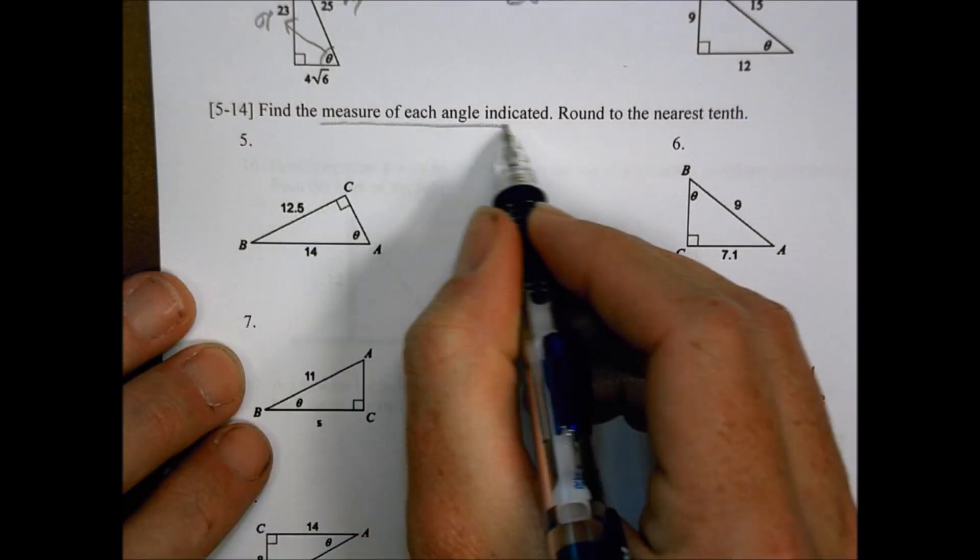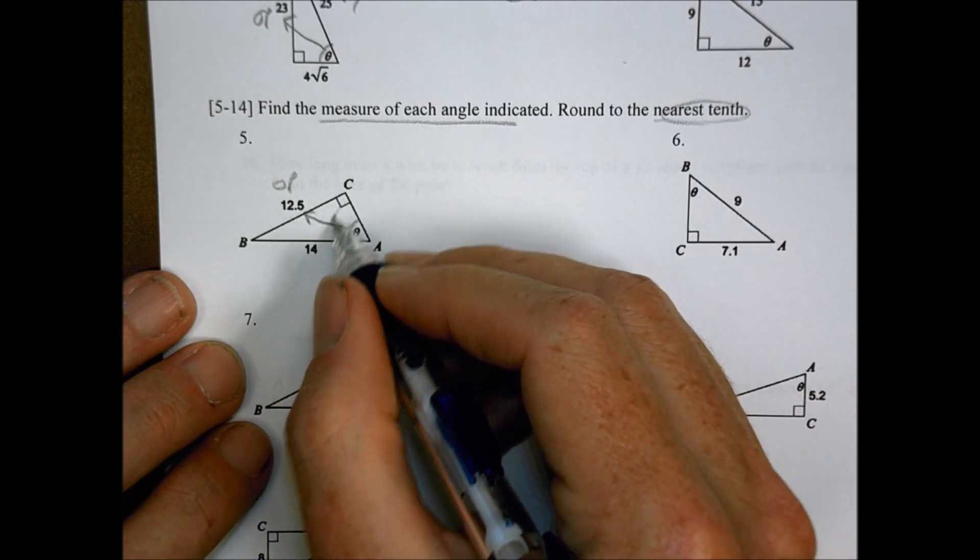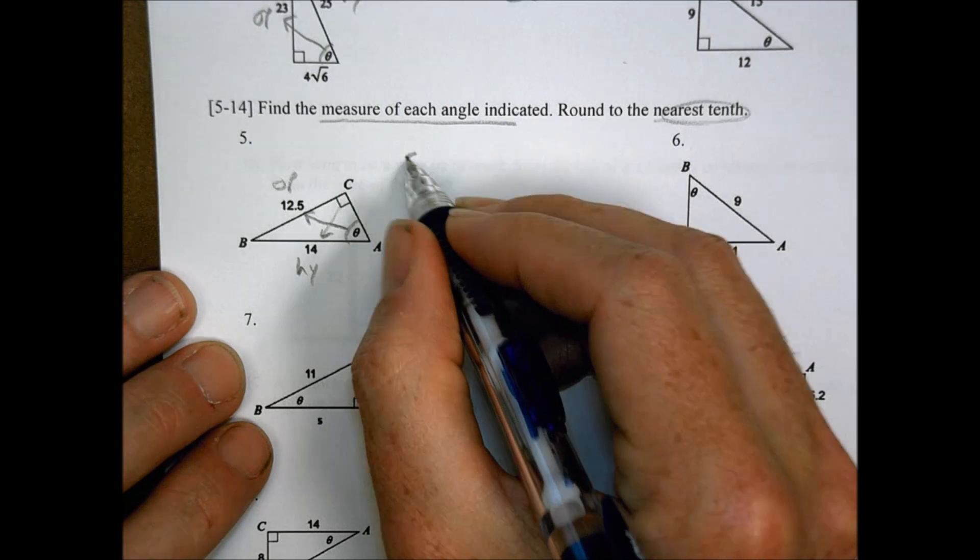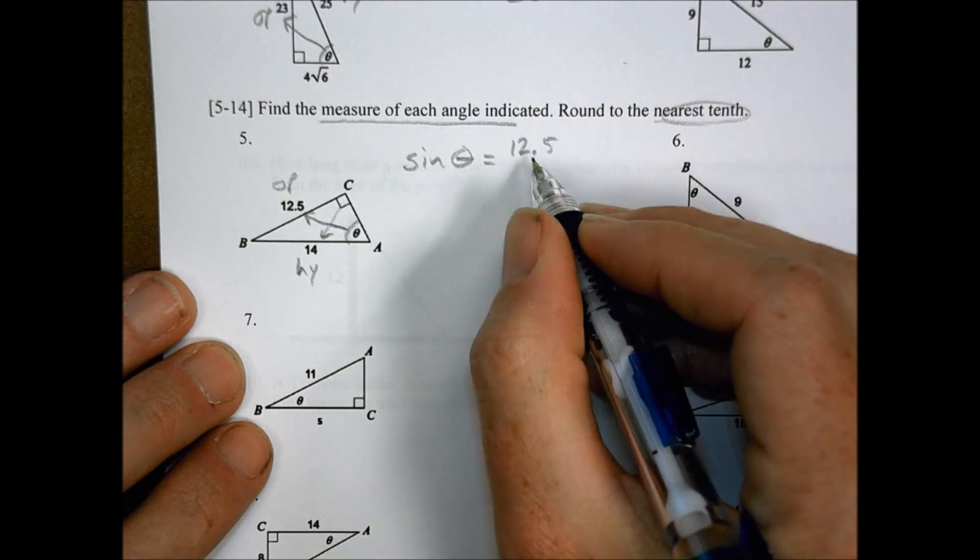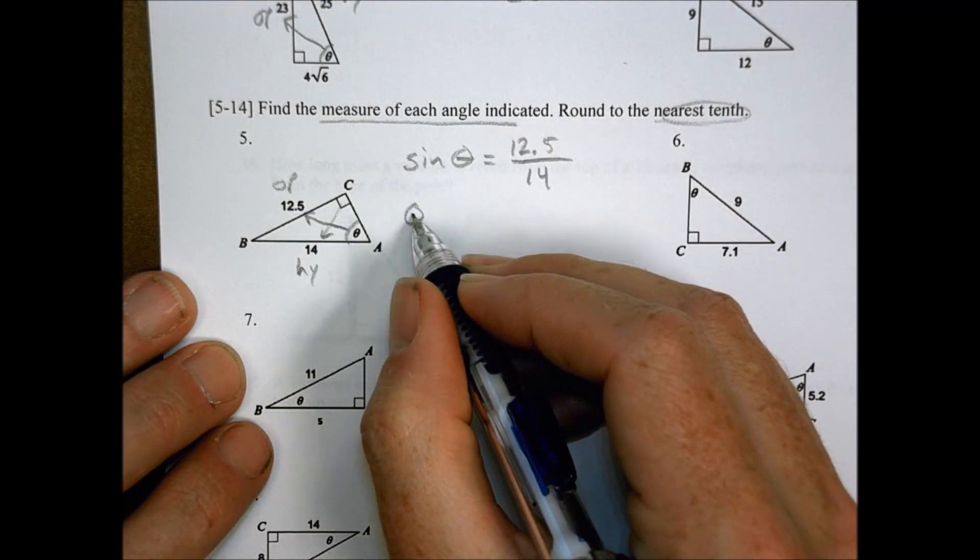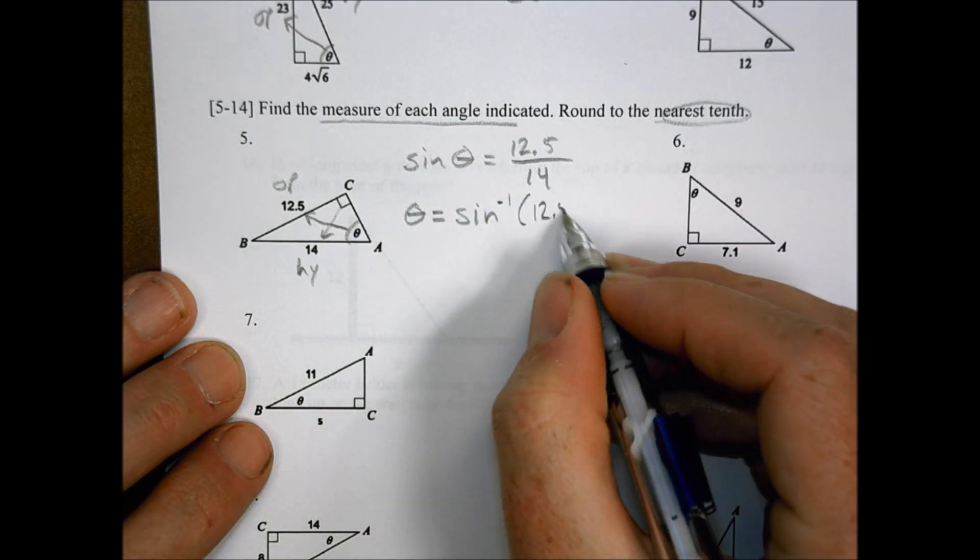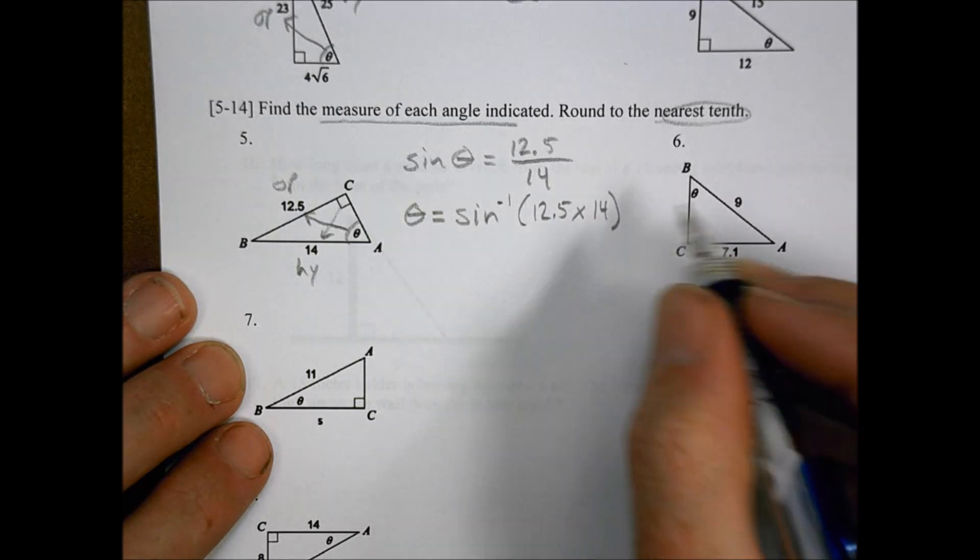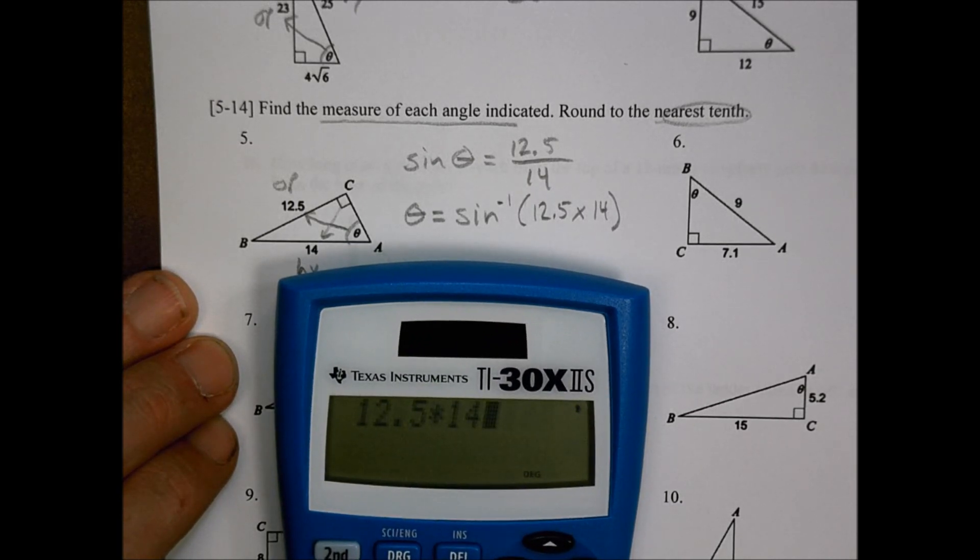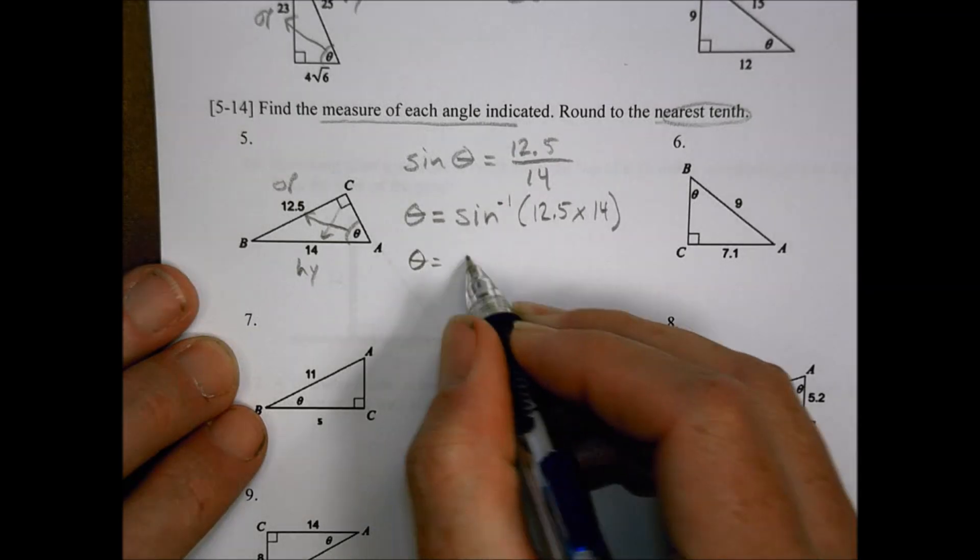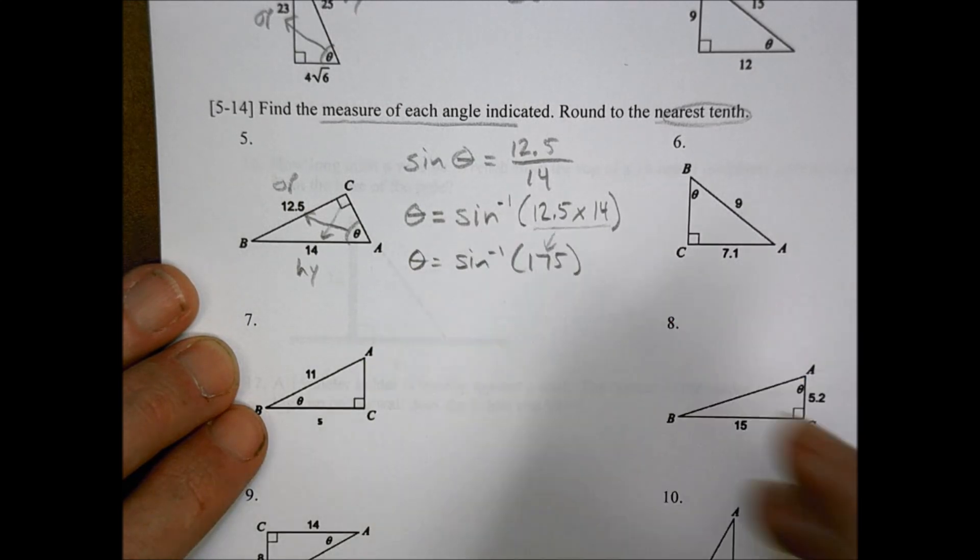Now getting on to the next ones here. We're going to find the measurement of each angle and we're around to the nearest tenth. So, here we have theta, and we can see it gives us a value for the opposite and we also have the value for the hypotenuse. That indicates to me that I can use the sine of theta. Theta is just standing for that missing unknown angle. Sine of theta equals 12.5 divided by 14. In order to get the theta by itself, it's going to look like this. Theta is going to equal the inverse of sine, so sine kind of minus 1 times 12.5 times 14, like this.